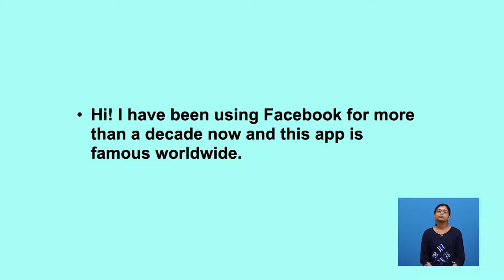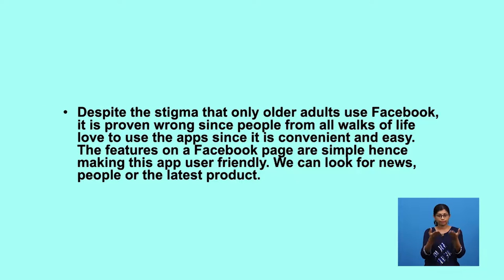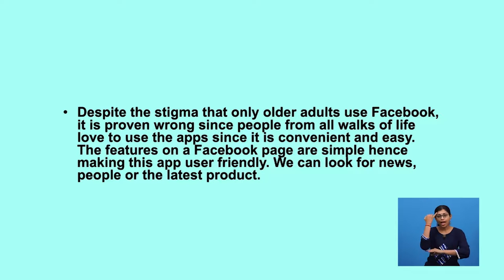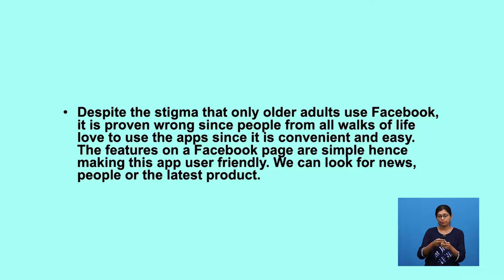Now, let's read the second paragraph together. 'Despite the stigma that only older adults use Facebook, people from all walks of life continue to love using this app. The features on a Facebook page are easy to find, hence making this app user-friendly. We can look for news, people, or the latest product.' The first line introduces the idea that Facebook is a convenient app loved by everyone — this sentence informs the reader of the main idea in the paragraph. We call this the topic sentence.